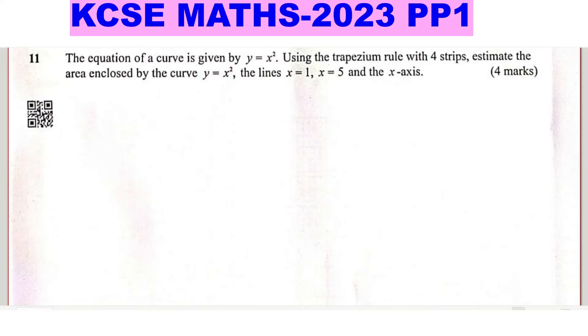So we're given the limits from x equals 1 to x equals 5. What we need in order to use the trapezium rule is the height that you're going to use for each of those strips from x equals 1 all the way to x equals 5.